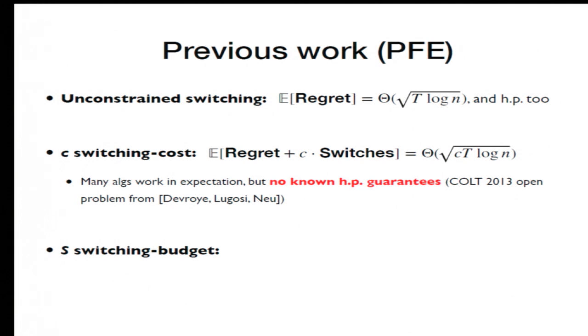In the switching cost setting, the minimax rate is also well understood. And there's many algorithms which achieve both the optimal rate for regret and switches in expectation. Some of these algorithms are follow the perturbed leader, shrinking dartboard, prediction by random walk perturbation. But even though these algorithms achieve the optimal rates in expectation, they don't with high probability. And so this was raised as an open problem a few years back.